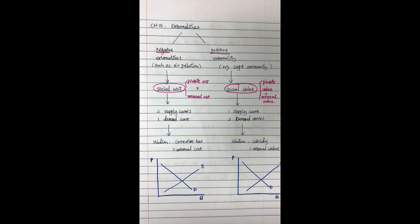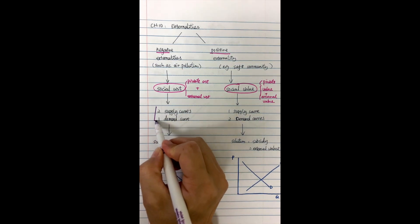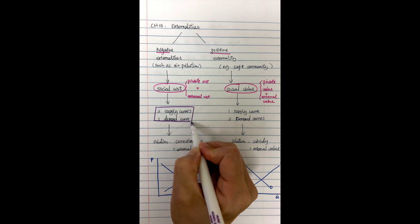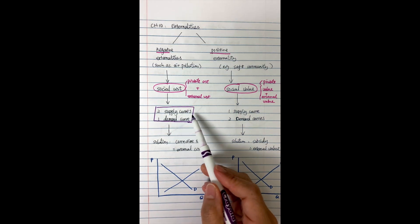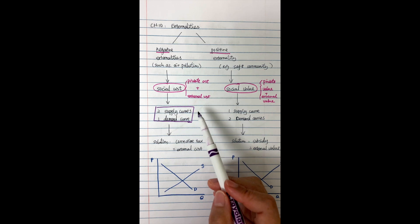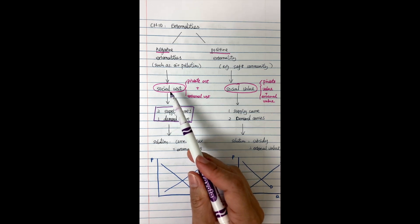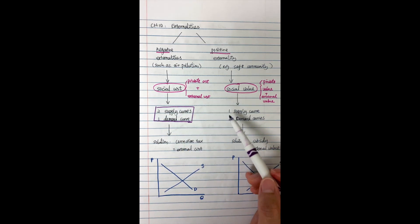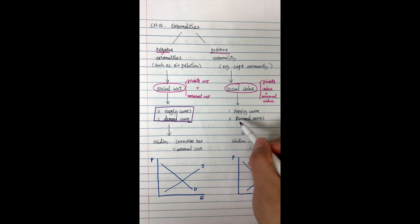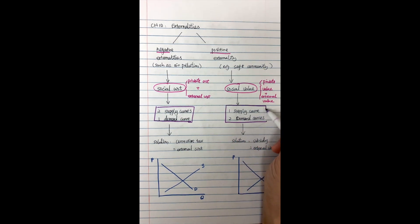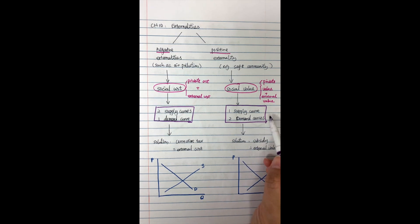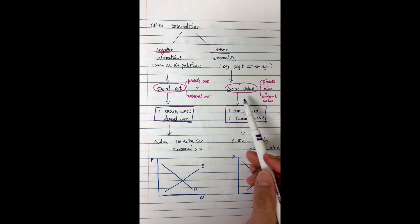If the market has negative externality, we will have two supply curves and one demand curve. One supply curve represents private cost and another represents social cost. However, if the market has positive externality — social value — it will be the opposite: one supply curve but two demand curves. One demand curve reflects private value to consumers and another reflects social value.